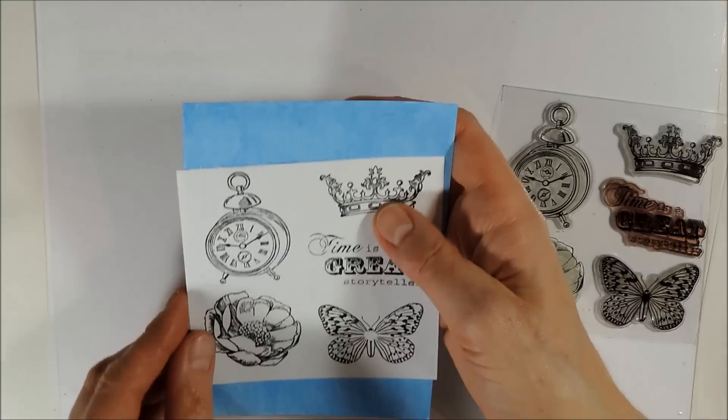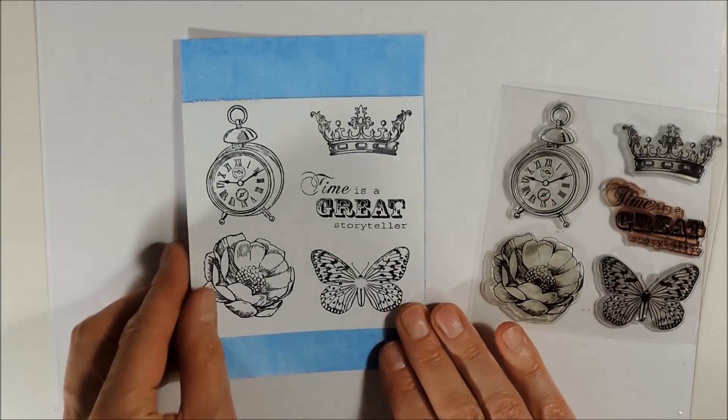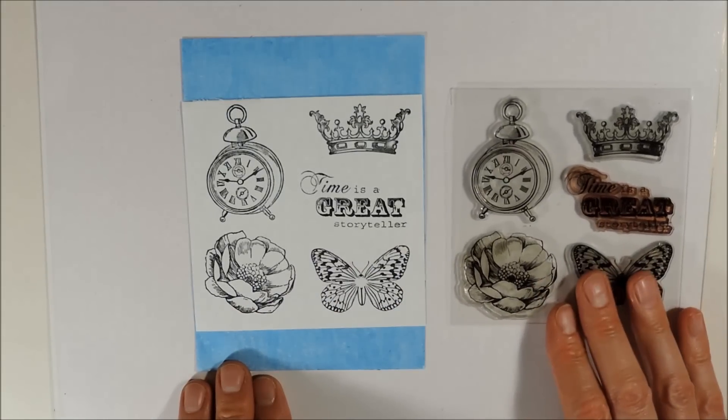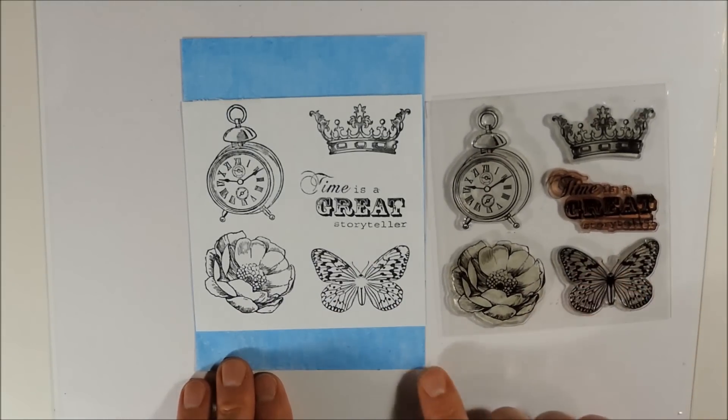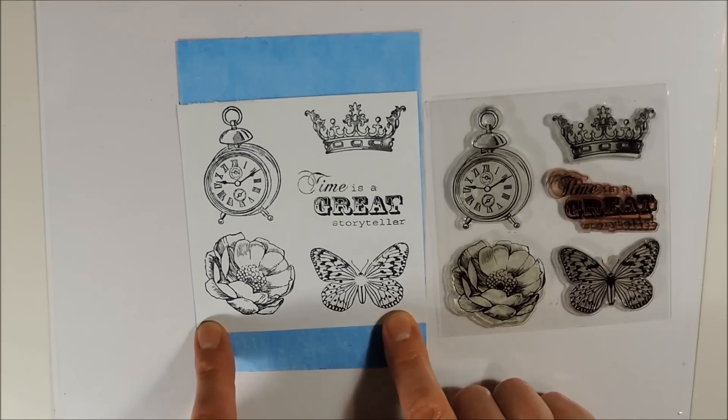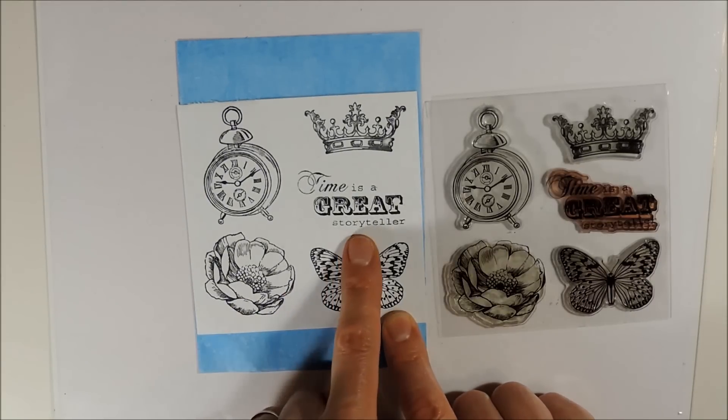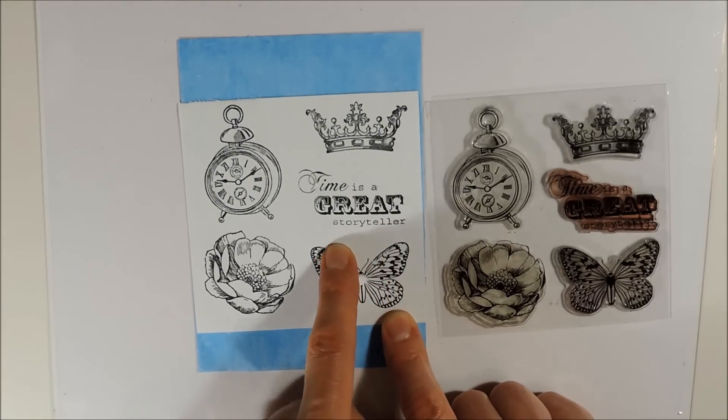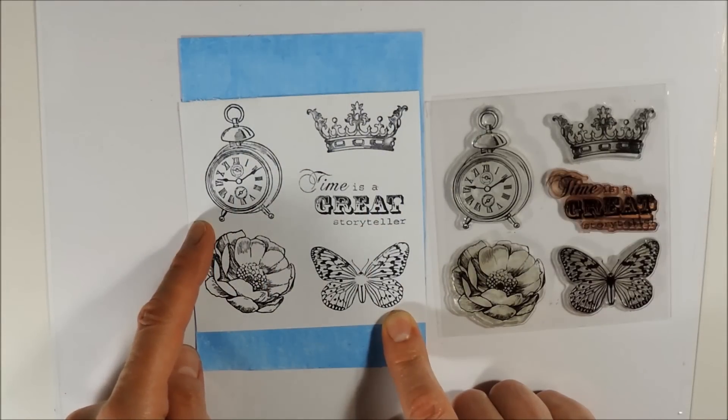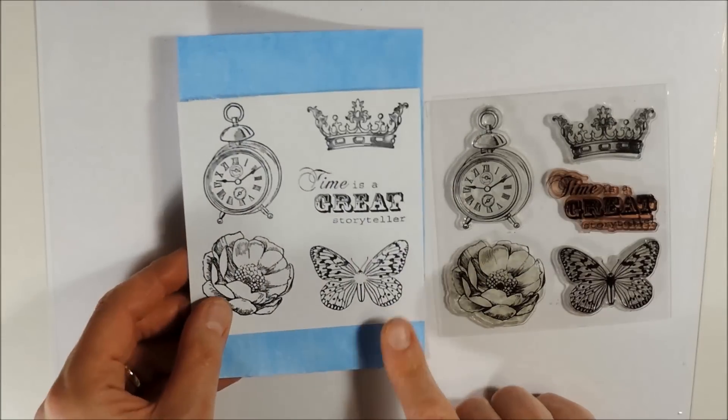So and here we have our first stamp set for today. And I have already put an index card beneath so you can get an idea how large the images are. Here we have a sentiment which says time is a great storyteller, a crown, an alarm clock, a butterfly and a flower.